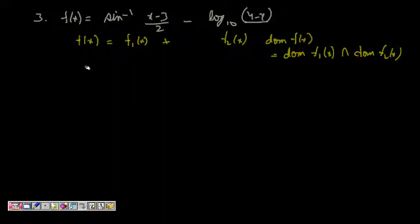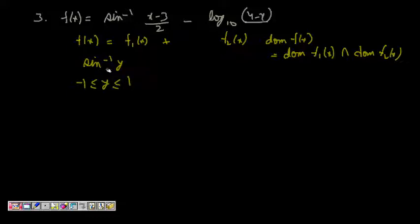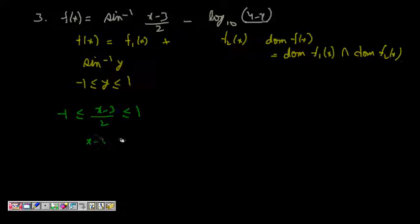For sin inverse, the function sin⁻¹(y) has domain -1 ≤ y ≤ 1, because that is what the sine of any number can be. So for f1(x), (x-3)/2 should be greater than or equal to -1 and less than or equal to 1. Multiplying by 2, x-3 should be between -2 and 2, giving us x ≤ 5 and x ≥ 1. So the domain of f1(x) is [1, 5].